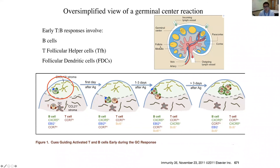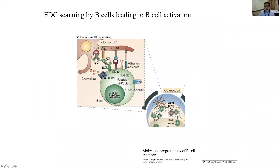What do B cells do when interacting with follicular dendritic cells? FDCs can express Fc gamma receptors and complement receptors, binding antibody and complement on their surface. They also express CD40 ligand, which interacts with CD40 on B cells to mediate survival signals, along with adhesion molecules, scavenger receptors, and CXCL13 for positioning cues. Essentially, the B cell scans the FDC, and if there's antigen present, it receives a priming signal allowing it to proceed to the T-B border.